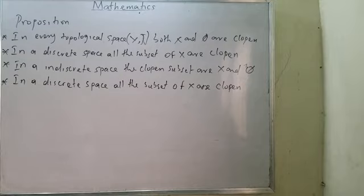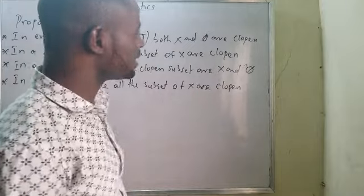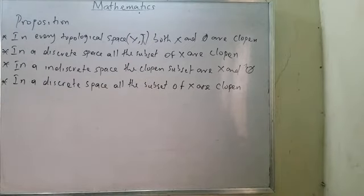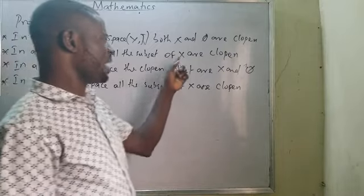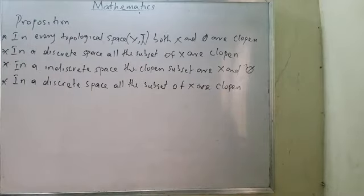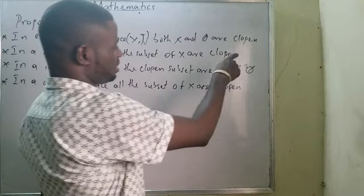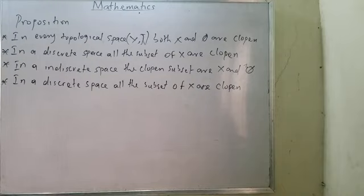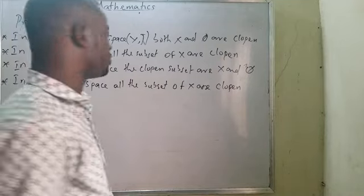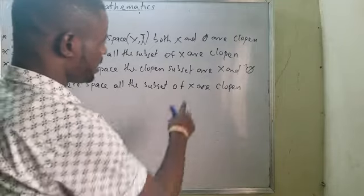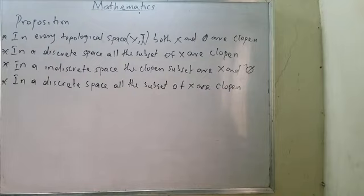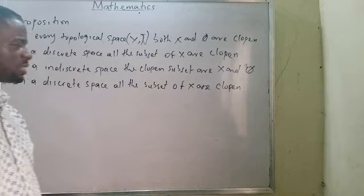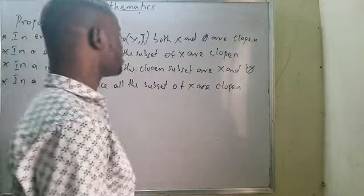Now look at this proposition: In every topological space, both X and ∅ are clopen — we have demonstrated that. In an indiscrete space, the clopen sets are only X and ∅. And in a discrete space, all the subsets of X are clopen.